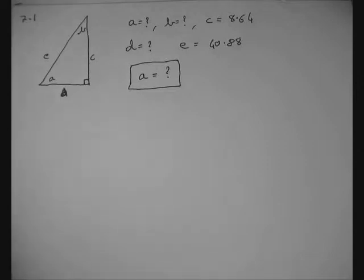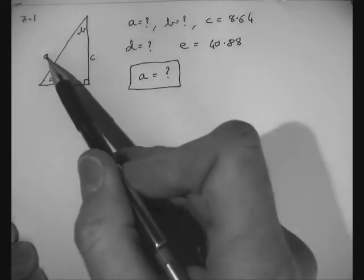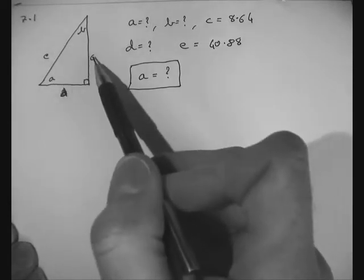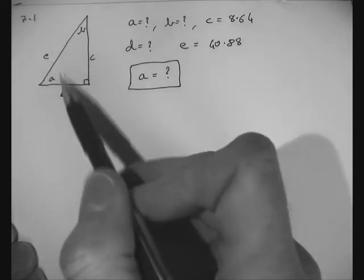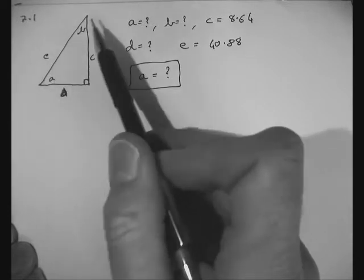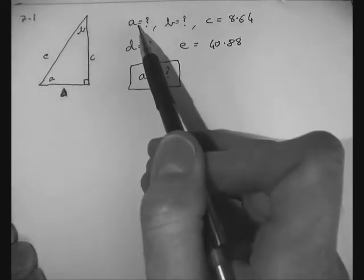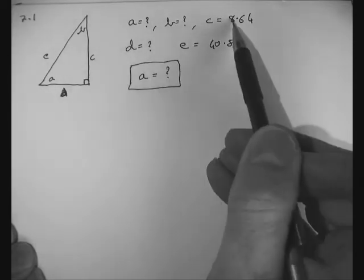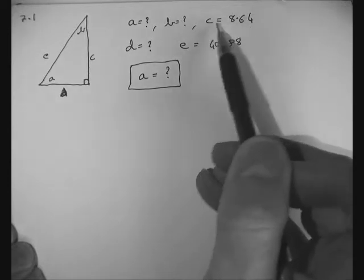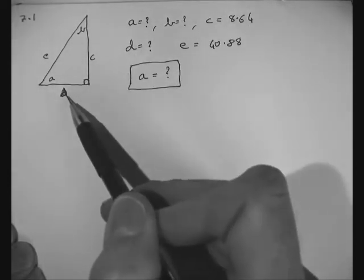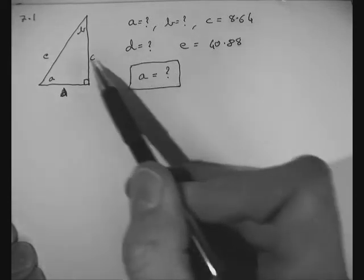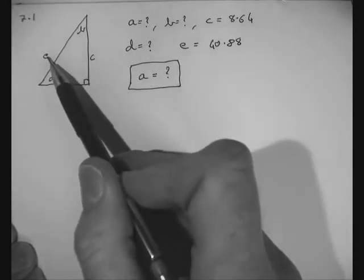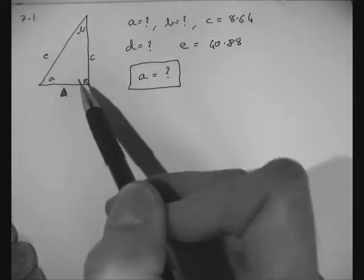This is the first of three videos for problem 7. We have a right angled triangle of hypotenuse E, other two sides C and D, and internal angles A and B. A is unknown, B is unknown, C is 8.64 units, D is unknown, and E the hypotenuse is 40.88, opposite the right angle.